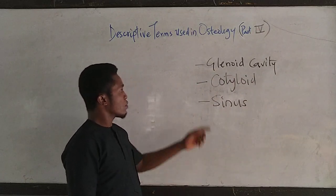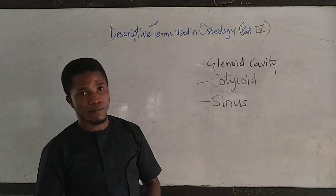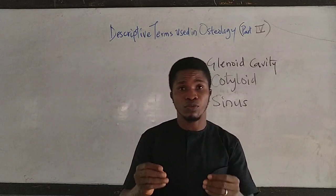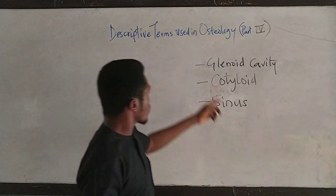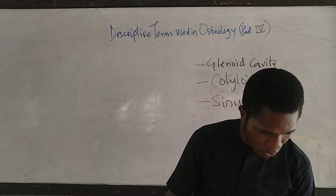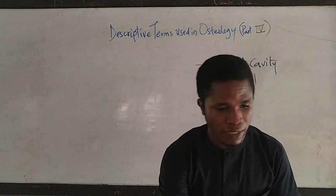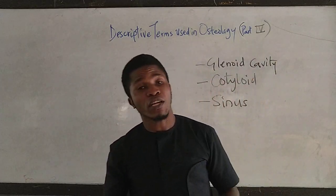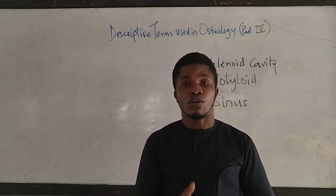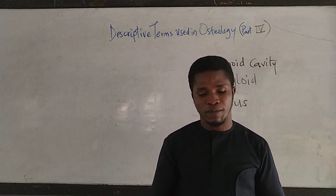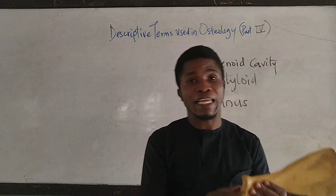What is the meaning of glenoid cavity? What is the meaning of cotyloid cavity? Then the meaning of sinus. As usual, I will show you examples as I describe these terms to you. The first one is the glenoid cavity. A glenoid cavity is a shallow articular depression found on bony surfaces or structures.